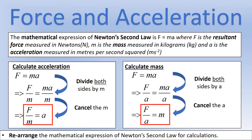We need the other forms to calculate mass and acceleration. Using F = ma we can calculate resultant force. To work out acceleration, we divide both sides by mass: a = F/m. To calculate mass, we divide both sides by acceleration: m = F/a. These two rearranged equations, shown in red boxes, let us calculate acceleration and mass.